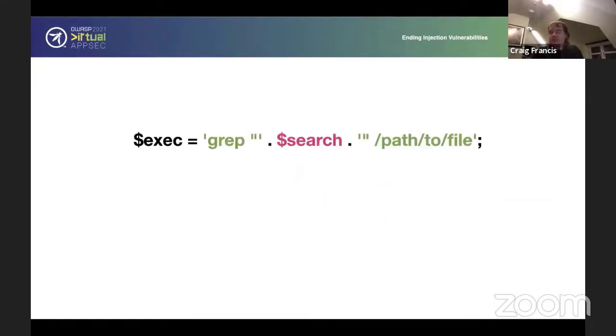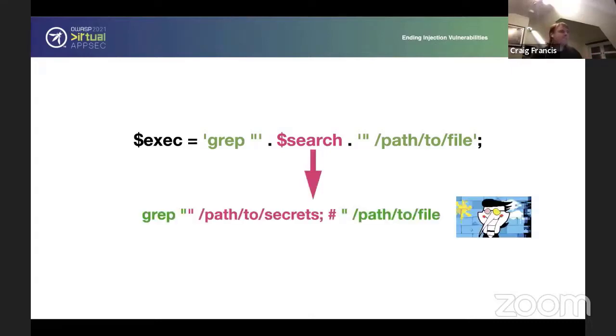Another example is command line injection. This is an example. Obviously, you're a programmer. You don't want to rebuild grep. grep will allow you to do a search through the file. But in this case, we've not escaped the value. We've just included it. So Spamton comes along and just puts in double quotes, past the secrets, semicolon, and then a hash to comment out the rest of the line. And now Spamton is seeing the entire contents of the secrets file.